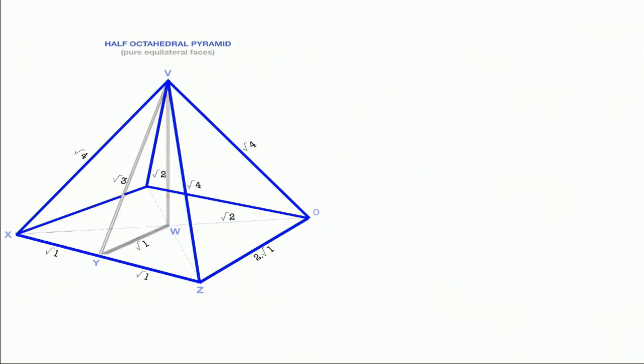The apothem slope is root three, the corner slope is root four. That would be a perfect pyramid. Why is there not a perfect pyramid? Maybe there is, maybe it's still buried under the sand somewhere.